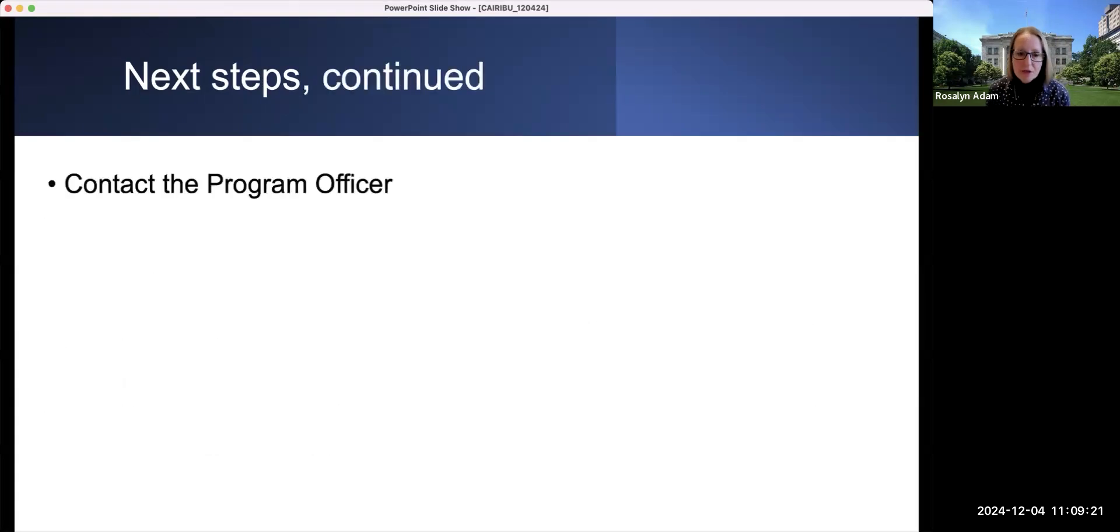It's often worthwhile contacting your program officer and their information will be displayed on the top of your summary statement. If your grant was discussed, the program officer may share feedback from the review meeting since they are often in the room. They do not participate in the review, but they can hear the discussion and they may be able to give you a distillation of the overall sentiment of the panel as your grant was being discussed.